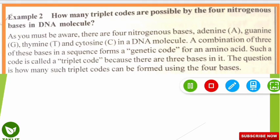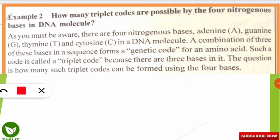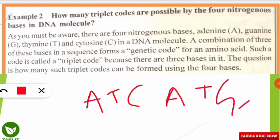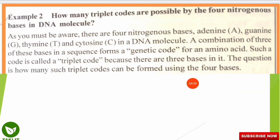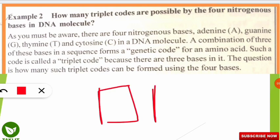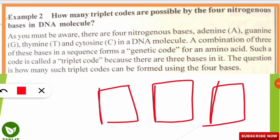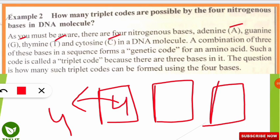To solve this, we make 3 boxes because a triplet codon requires 3 nitrogenous bases. In the first box, how many bases are possible? All 4 — A, T, G, and C — so we write 4 in the first box. In the second box, similarly all 4 bases are possible: Adenine, Guanine, Thymine, or Cytosine, so we write 4 again.